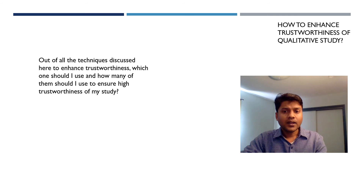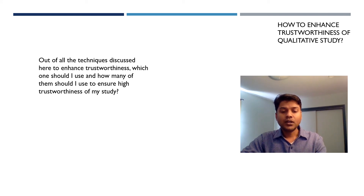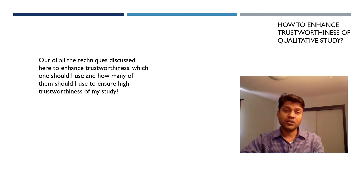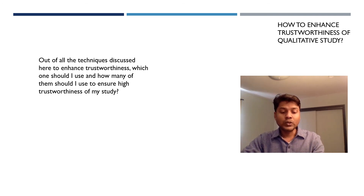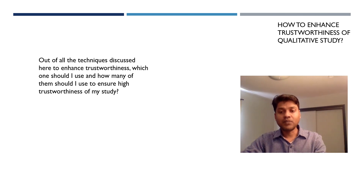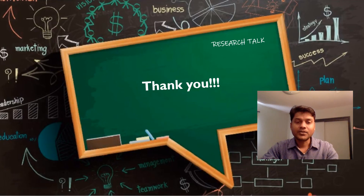Another question is which methods to use. It depends on the resources you have, the topic you are exploring, and how easy or difficult it is to adopt a particular method. Based on your topic and available resources, you can decide, but I suggest adopting at least two to three methods. When you write and submit your manuscript for publication, you have to convince the reviewer that you have taken all necessary steps and that the findings from your study are trustworthy.